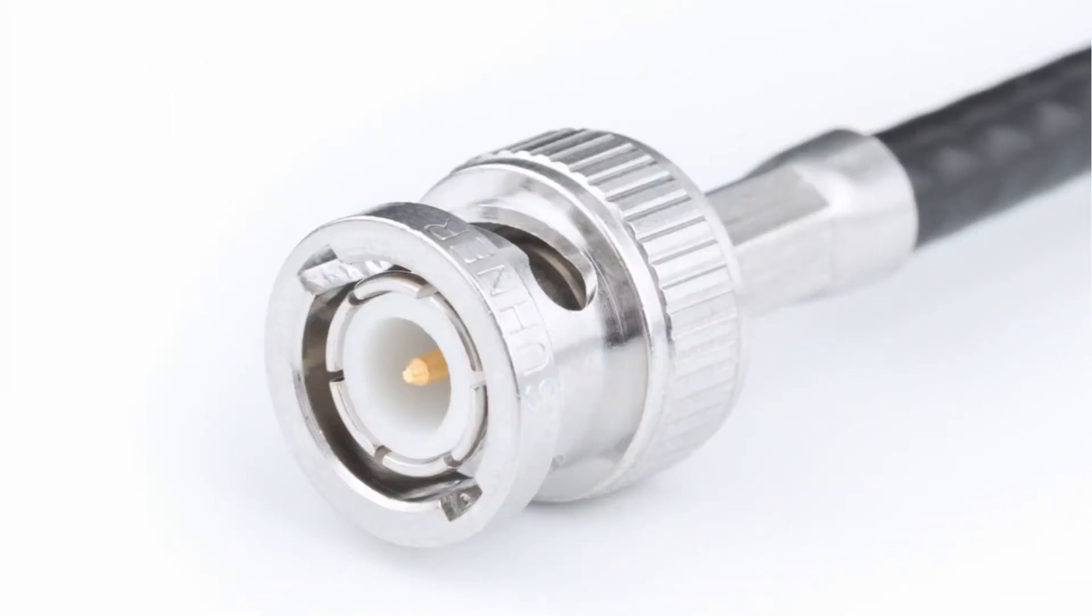Historically, the most common connector used with coax cable was the BNC connector. It had a bayonet lock that ensured reliable retention when connected. The Coaxpress standard adopts the use of the BNC connector.